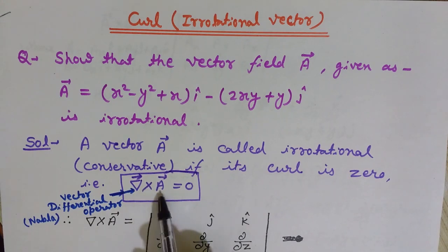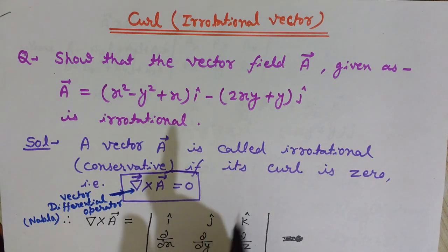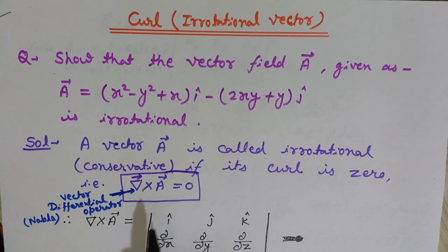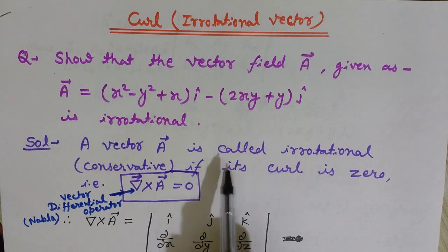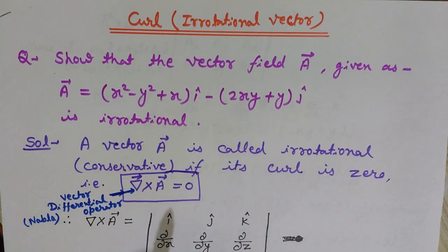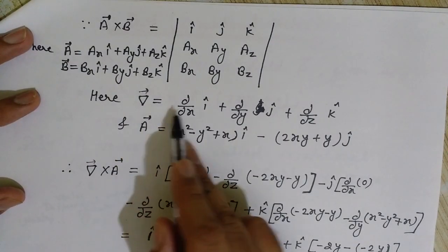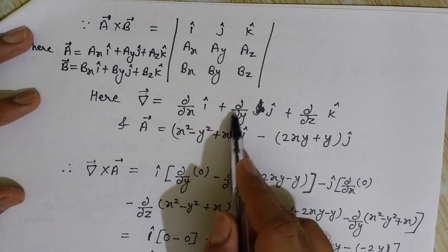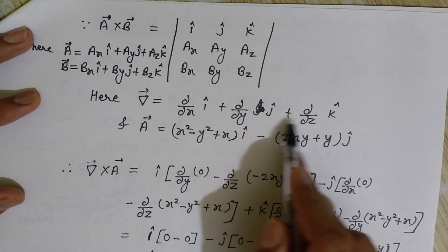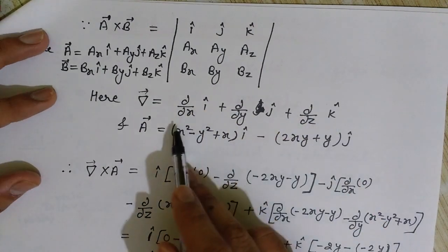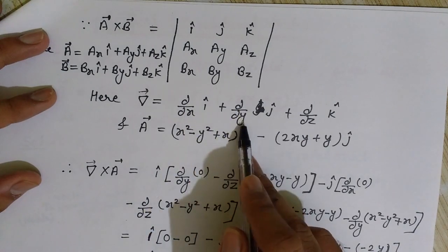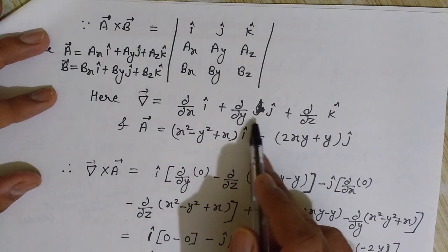In other words, if the curl of this vector is zero then it is irrotational or conservative. So we just need to calculate this curl, and if it equals zero we will say that it is irrotational. Let me show you what we mean by the del operator. Del is equal to (∂/∂x) î + (∂/∂y) ĵ + (∂/∂z) k̂.